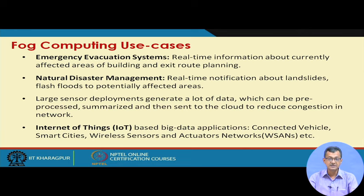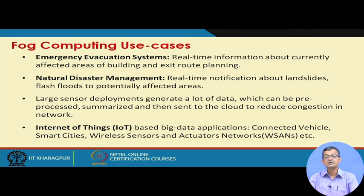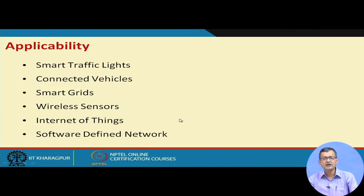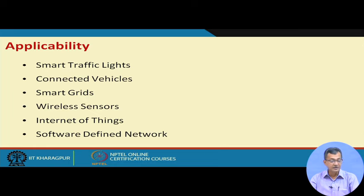Internet of Things based applications like connected vehicles, smart cities, wireless sensor networks, actuator networks, and related systems push large amounts of data. In many cases, local decisions are more important than global decisions. Key applicability areas include smart traffic lighting, connected vehicles, smart grids, sensor networks, IoT, and software-defined networks, which provide the backbone for these applications.